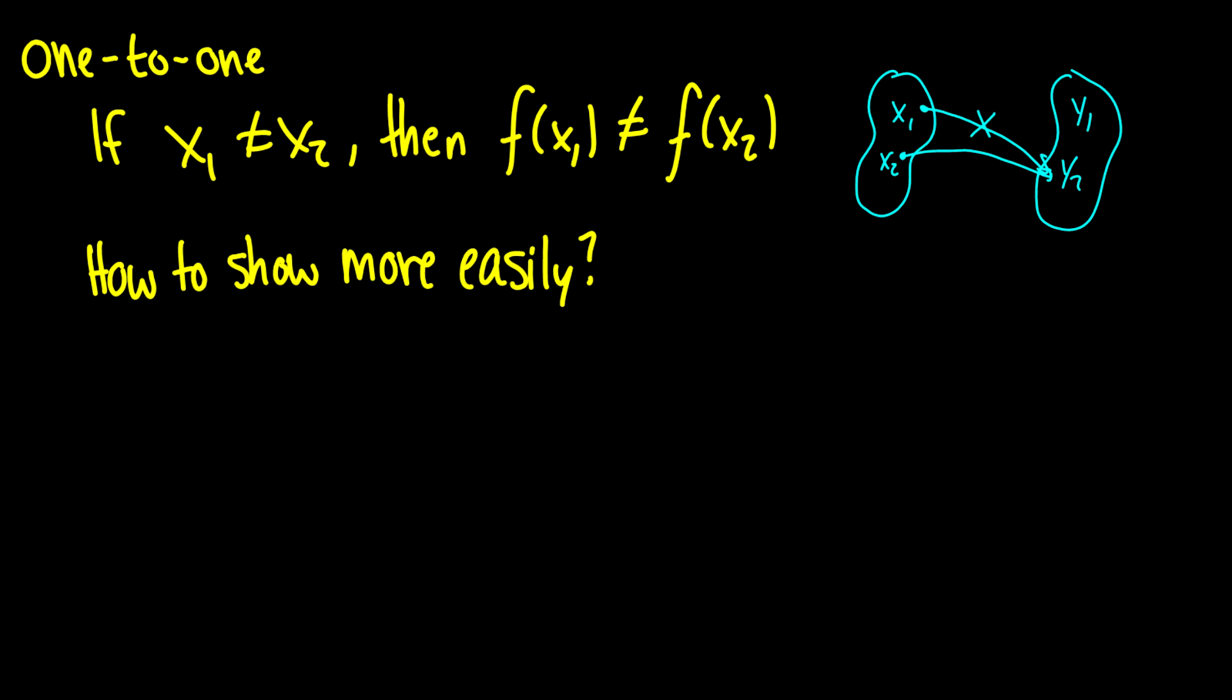In proofs, instead of showing that if x1 is not equal to x2, then f(x1) is not equal to f(x2), we simply do the contrapositive. We show that, suppose f(x1) is equal to f(x2), and then we prove that x1 is equal to x2.